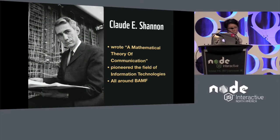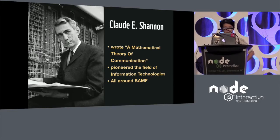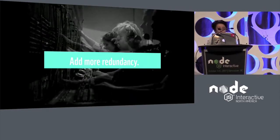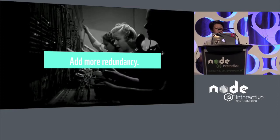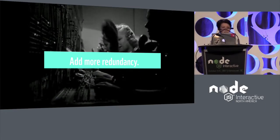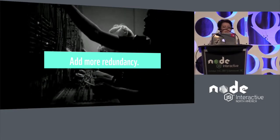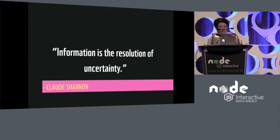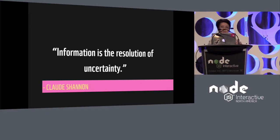In Shannon's paper, he dismissed all these other areas that scientists were studying in one fell swoop, and essentially said this about information: add more redundancy. Prior to Shannon's breakthrough, information was just not an area of study. In fact, Shannon is widely considered to be the father of the field of information studies. He said this about information: it's simply the measure by which we overcome uncertainty.